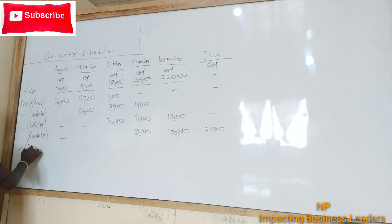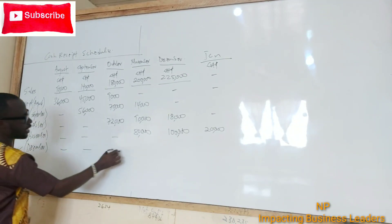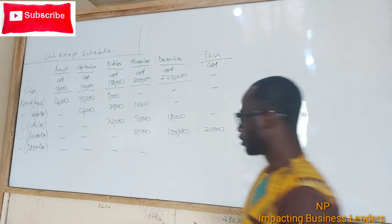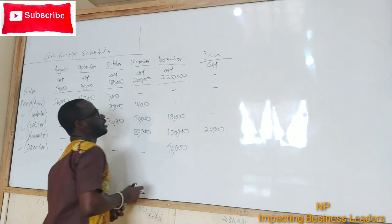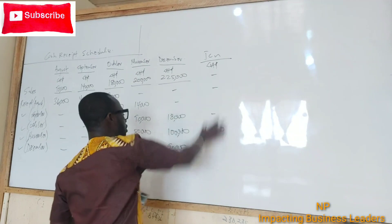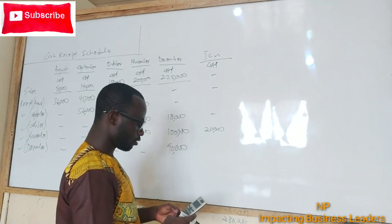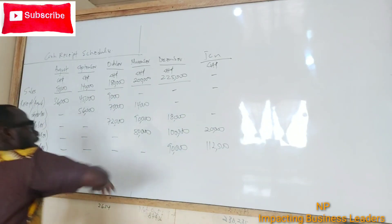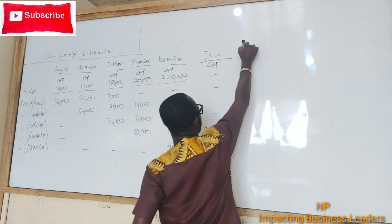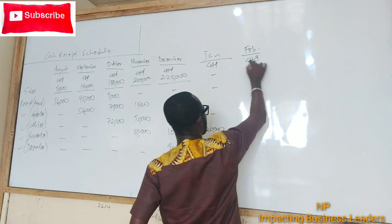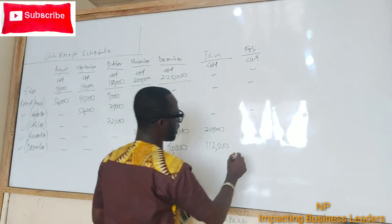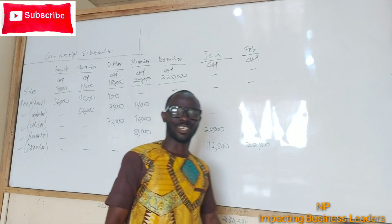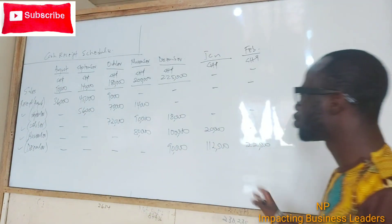For December sales, we follow the same pattern. 40% in December: $0.4 × $225,000 = $90,000. The month after the sales is January, where we receive 50% — that is $112,500. Then the following month — February — we receive 10%, which is $22,500. That covers December's sales collections.